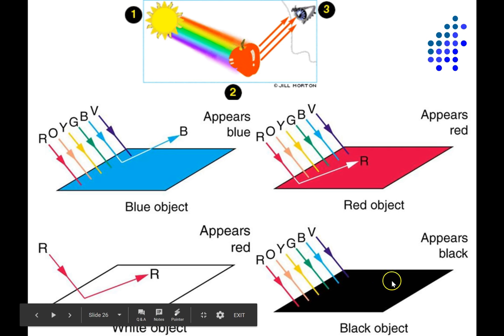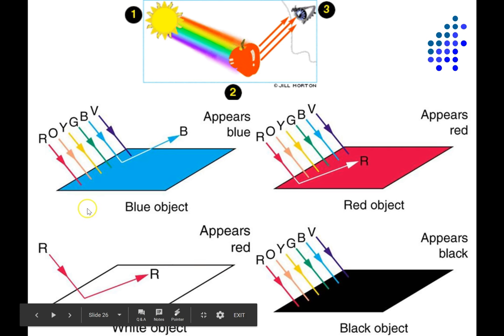An object appears black if it's absorbing nearly all the wavelengths of light across the visible spectrum. An object would appear white if it's bouncing back nearly all the light across the visible spectrum.